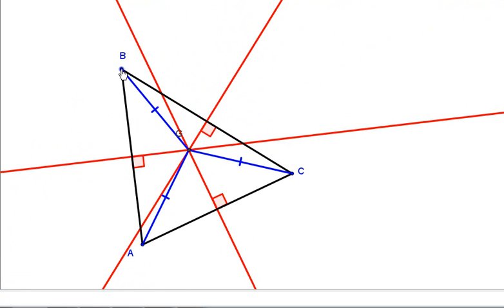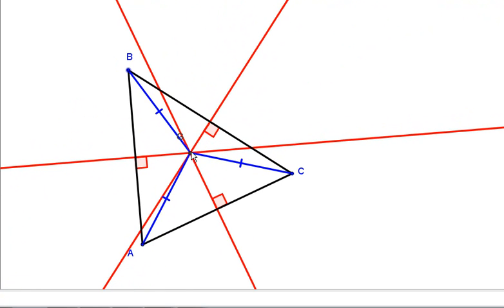And that's because since G is on the perpendicular bisector of AC, we already know it's going to be equidistant from A and C. Since G is also on the perpendicular bisector of side AB, then it has to be equidistant from A and B.